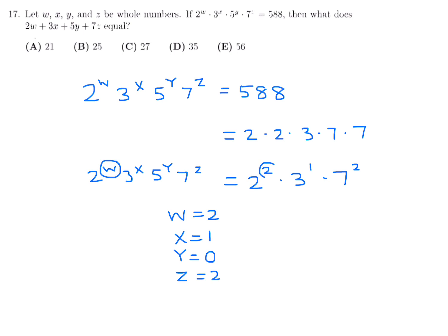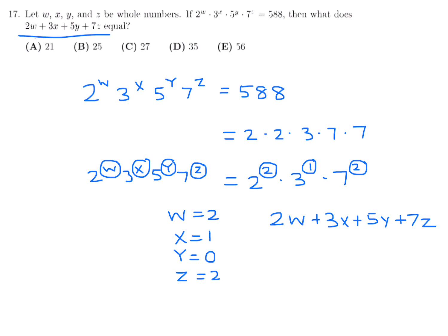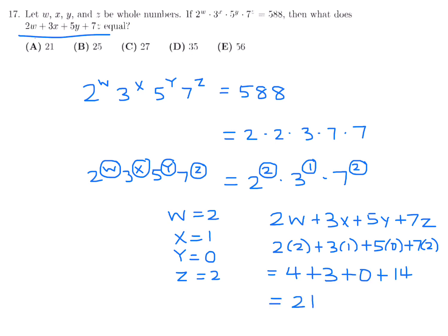Confirming: w matches the exponent of 2, x matches 3, y=0 since there is no factor of 5, and z matches 7. Then 2(2) + 3(1) + 5(0) + 7(2) = 4 + 3 + 0 + 14 = 21. Number 17, answer B.